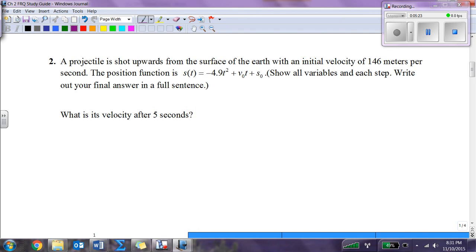The projectile is shot upwards from the surface of the earth with an initial velocity of 146 meters per second. The position function is s. Show all variables in each step. What is the velocity after 5 seconds? s sub 0 is the initial height. It's shooting off the surface of the earth, so the initial height is 0. Now I can say that s of t equals negative 4.9 t squared plus 146 t.